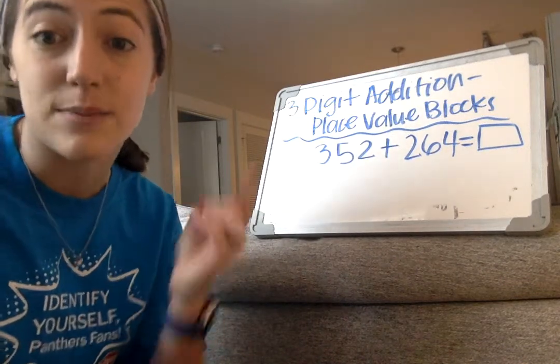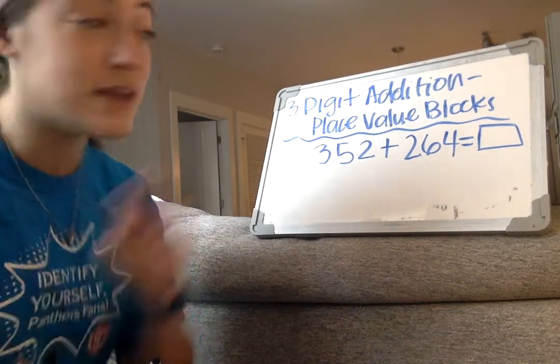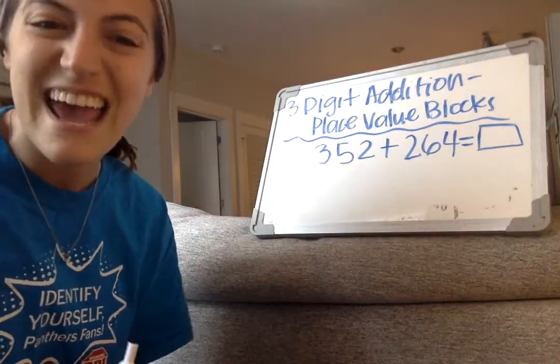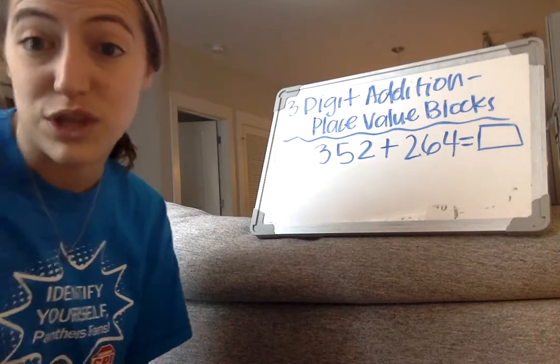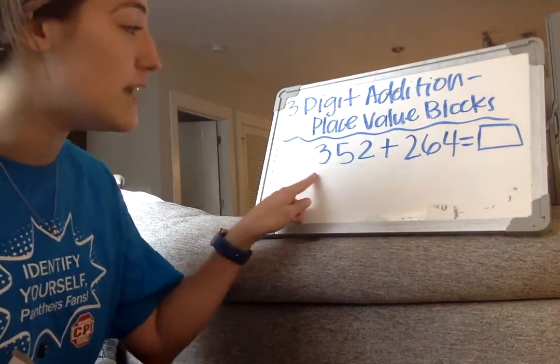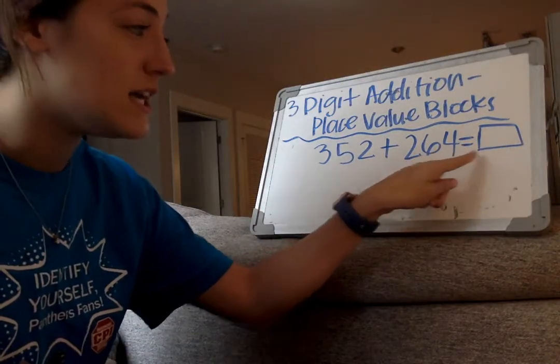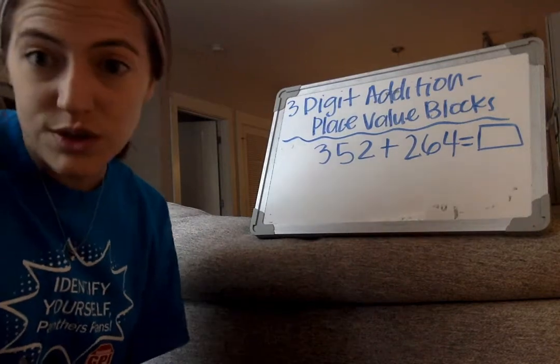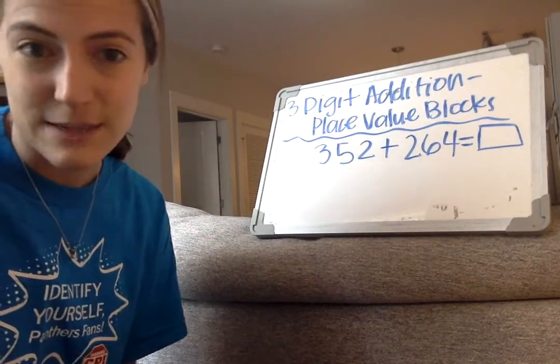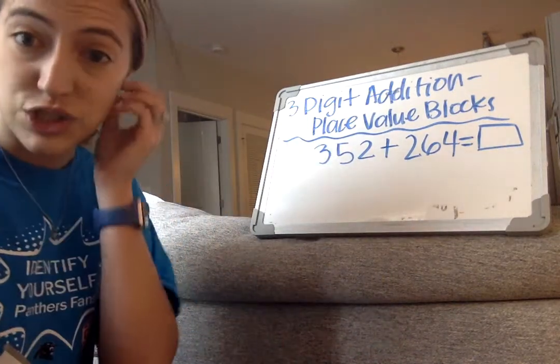Ms. Giannino showed us the break-apart strategy. We know that we have the number line, and we could also solve using place value blocks or using a hundred tens-and-ones chart, and that's the strategy I wanted to go over with you today. I'm going to show you and model with this number, 352 plus 264 equals box. You could practice with lots of different numbers within a thousand.